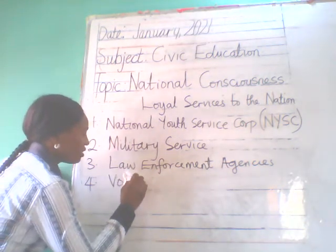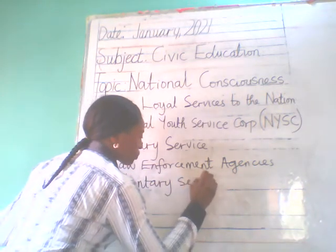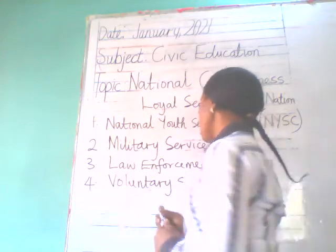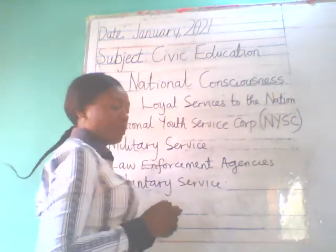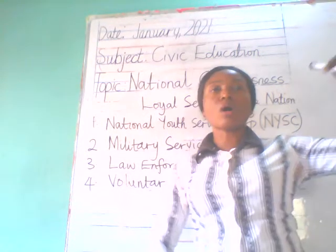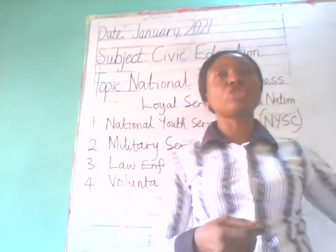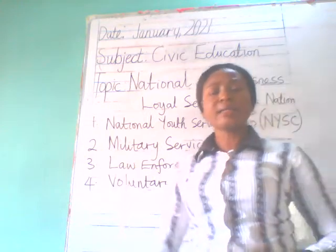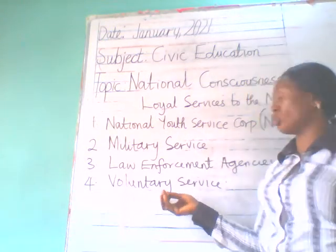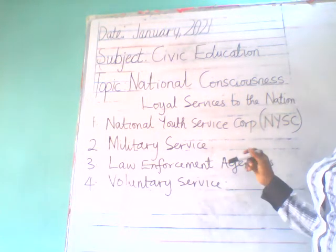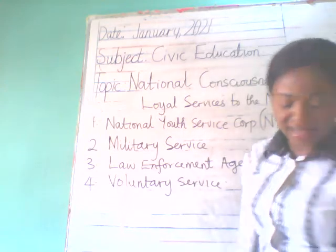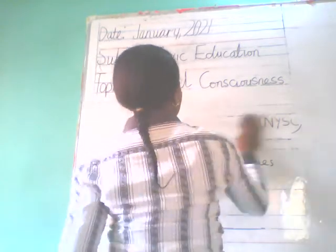Law enforcement agencies are loyal services that help citizens to behave. Number four is voluntary services — where you find the members of the Boy Scouts, Red Cross, Girls Brigade, and others. They render voluntary services; they don't get paid, but they do these things. For example, Red Cross members come to government functions and attend to anyone who has an injury, rendering first aid services.